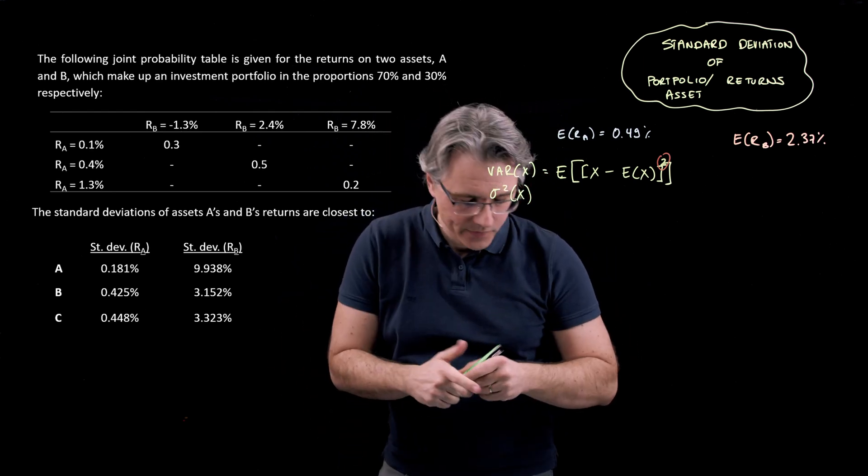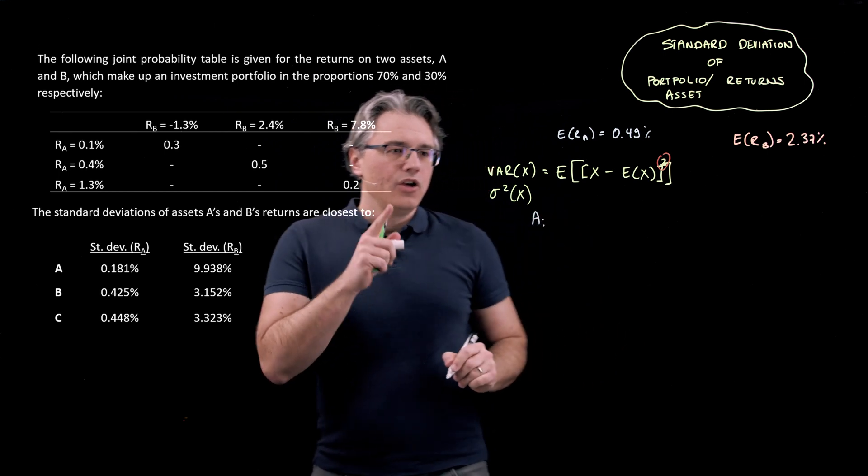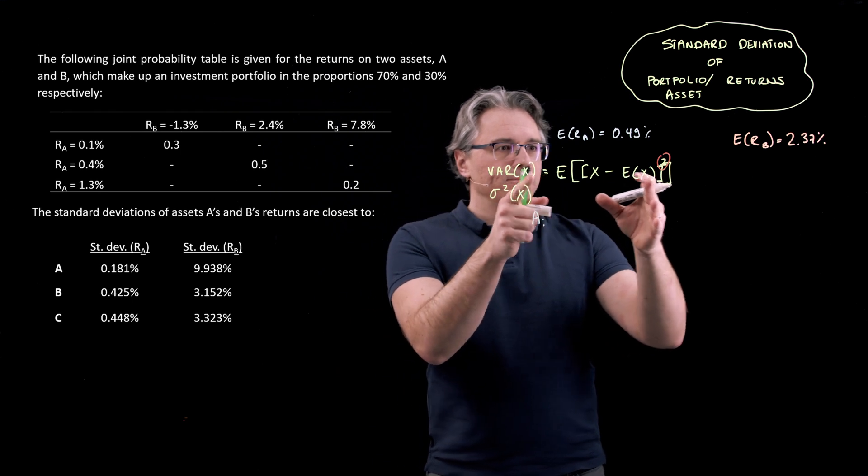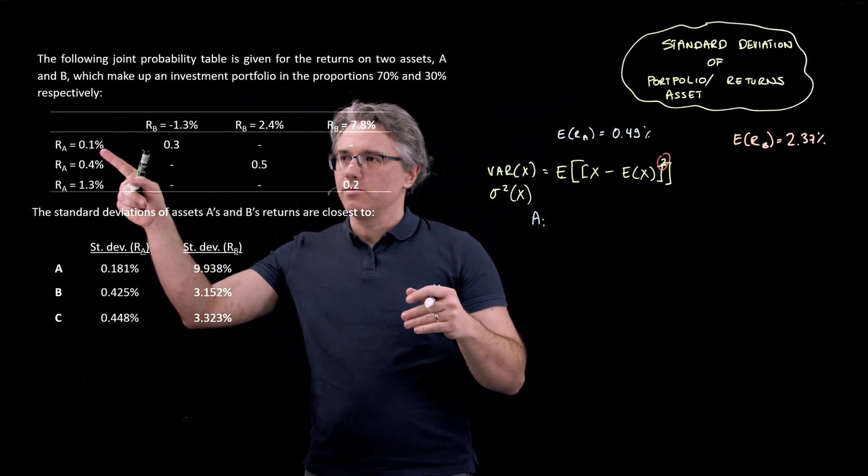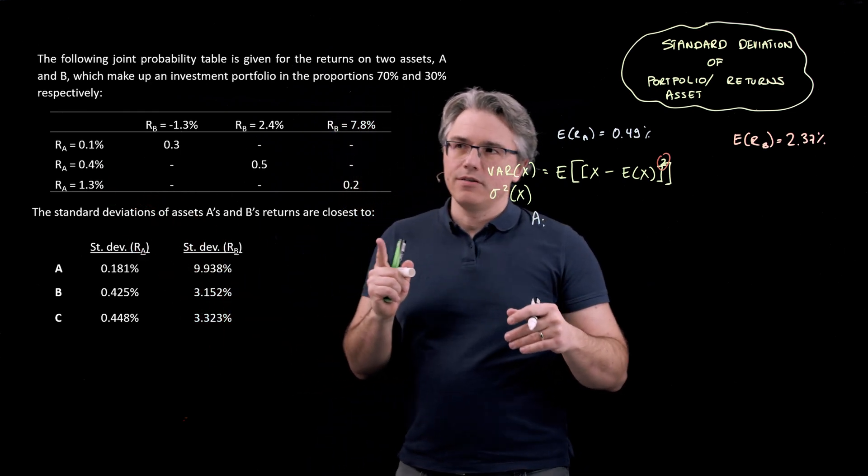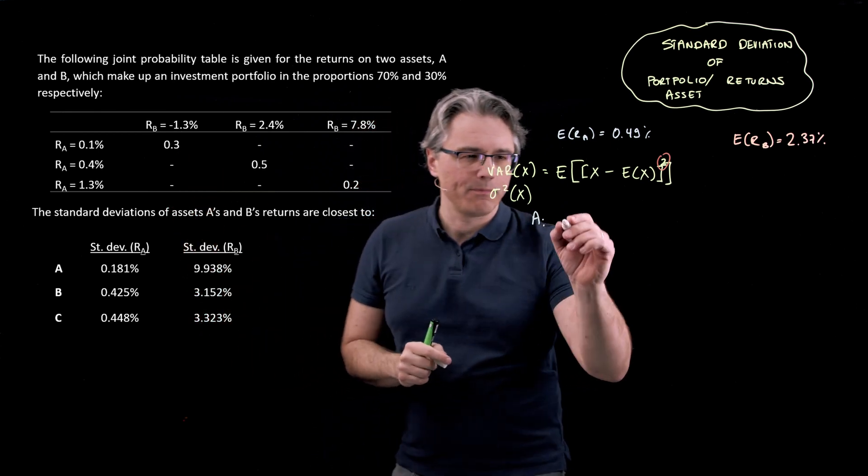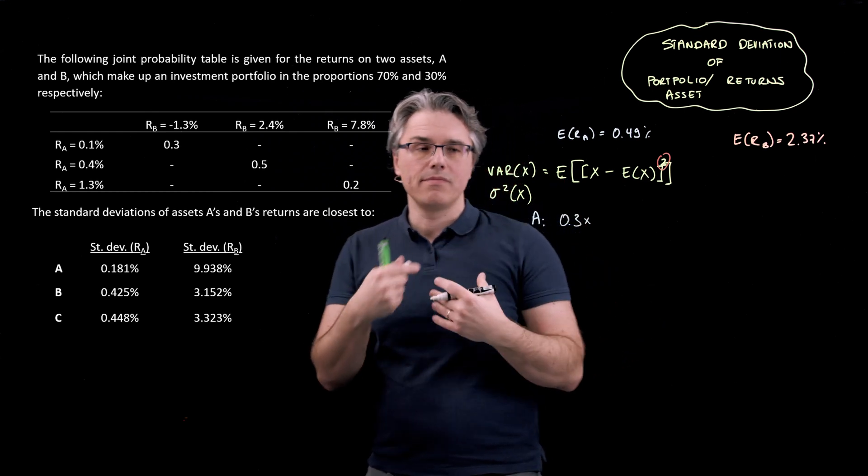Well, let's start with A. Okay, and for that one, I'm going to use this color A. What we're going to do is create a set of three computations, because there are three possible values that A may take on. And for each one, we're going to use the relevant probability. So like for the first one, 0.3. 0.3, which takes care of the probability weighing, because this is going to be an expected value.